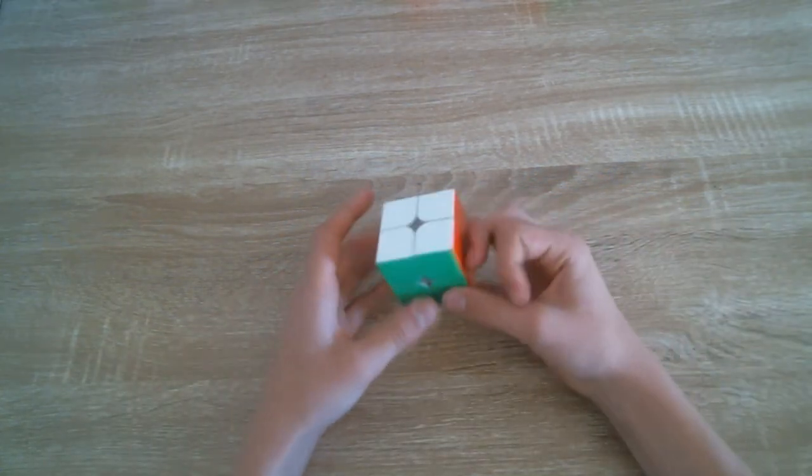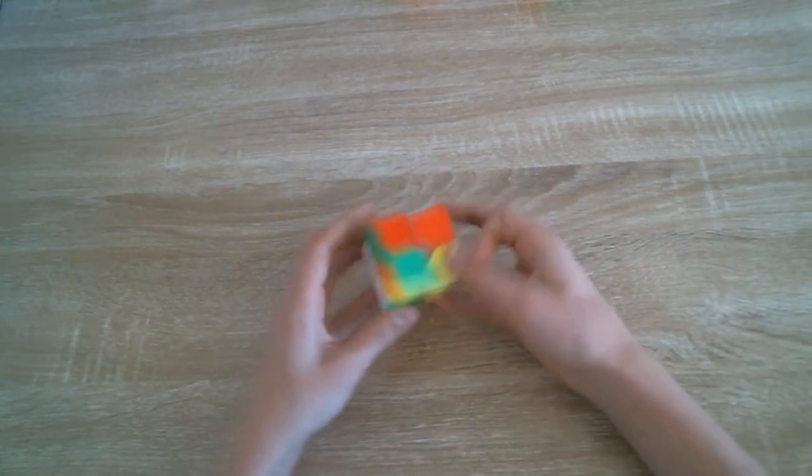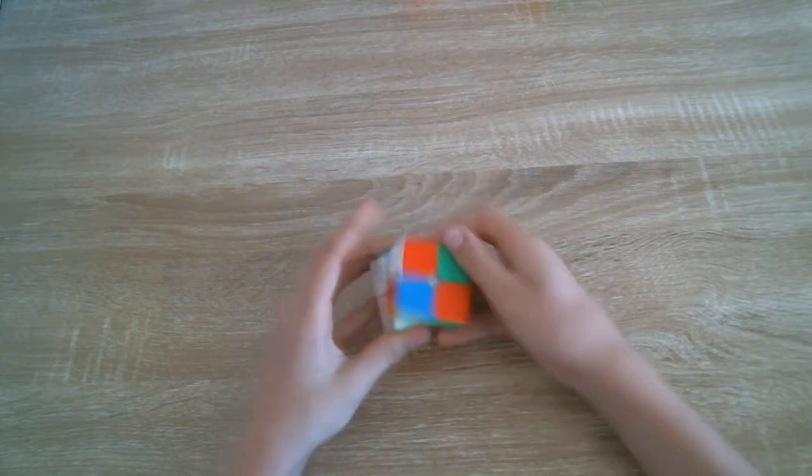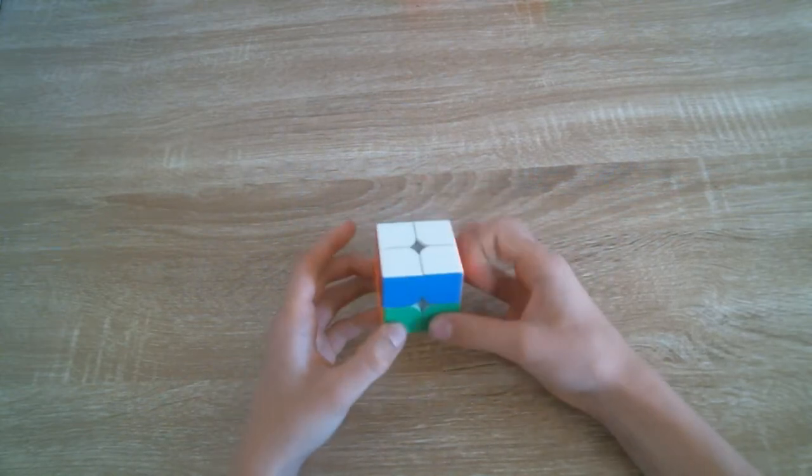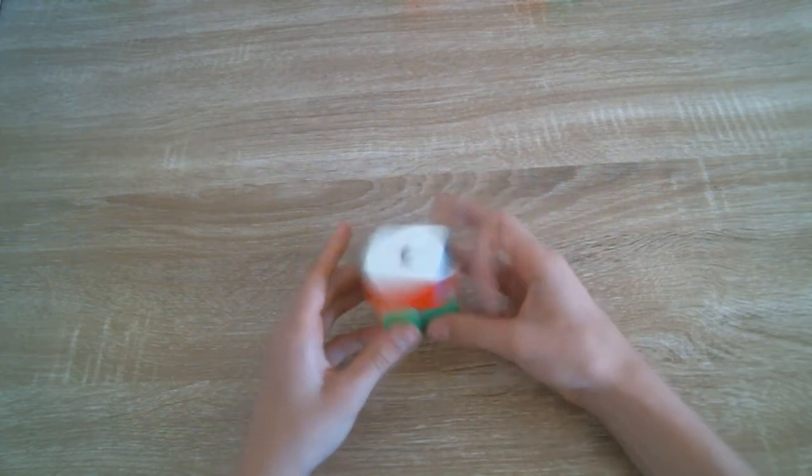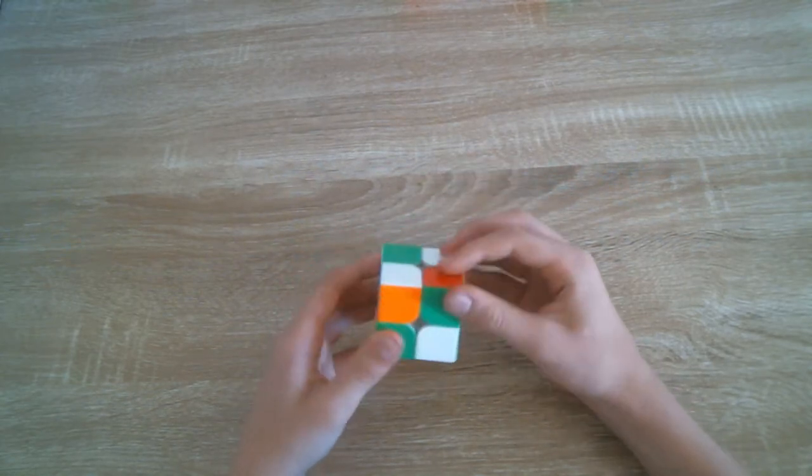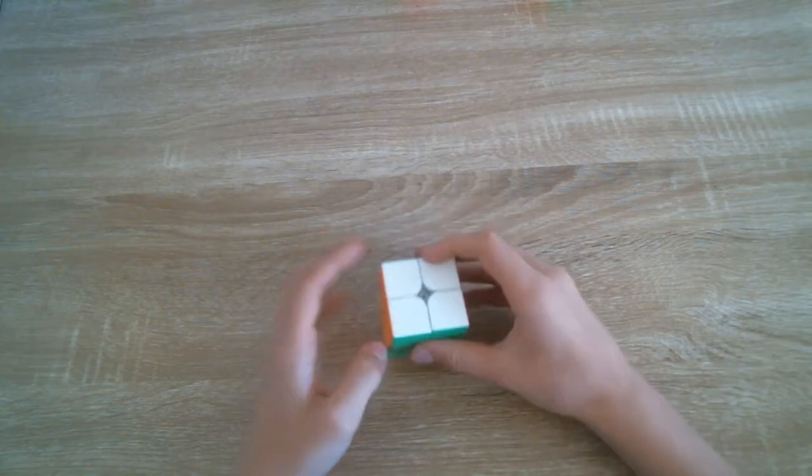Moving on to magnetic 2x2s, we have a Yuppo V2M which is my first magnetic 2x2. And I actually had another one but my friend accidentally stole it at a competition. So Lucas, if you're watching this, I want it back please.